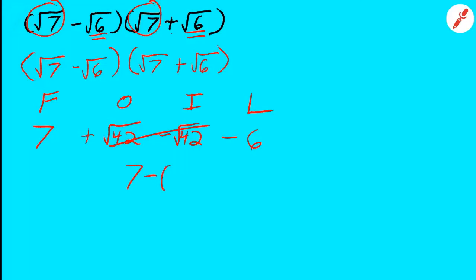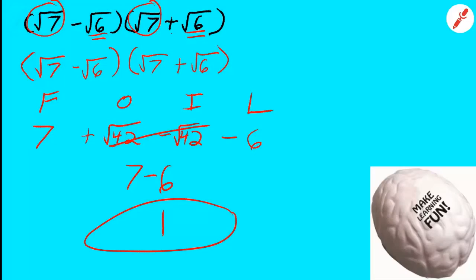And what is 7 minus 6? It's 1. Just plain 1 — no square roots. That's because these are conjugates. When you multiply square root conjugates, your middle terms disappear, your end terms become whole numbers, and your final answer will be a whole number.